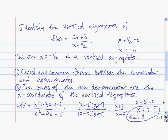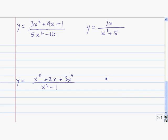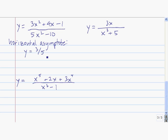Now let's talk about horizontal asymptotes — those are a bit more involved. Let's take a look at this one. Since the degree of the numerator is 2 and the degree of the denominator is 2, the horizontal asymptote is the ratio of the leading coefficients. So the horizontal asymptote is y equals 3 fifths. In this case, the degree of the numerator is 1 and the degree of the denominator is 3. When the degree of the denominator is larger than the degree of the numerator, then y equals 0 is a horizontal asymptote.